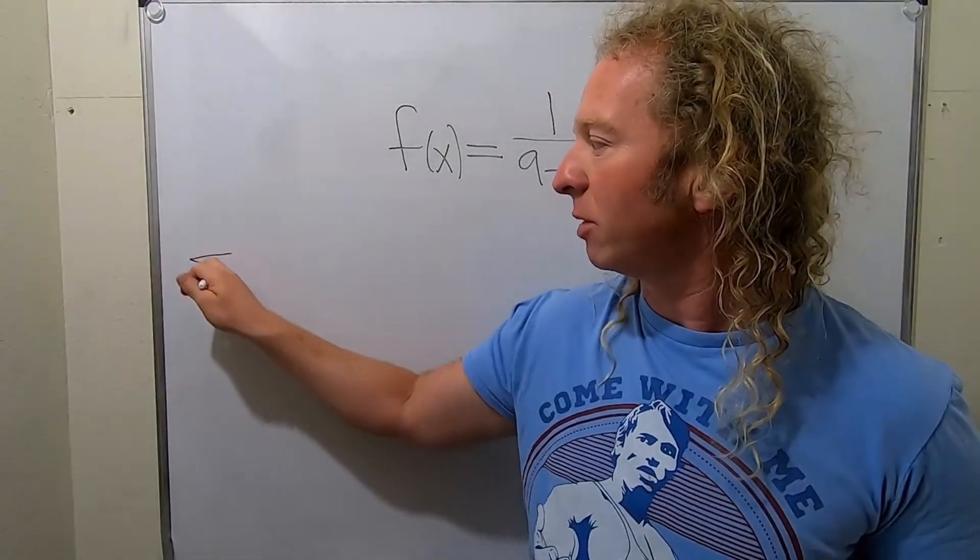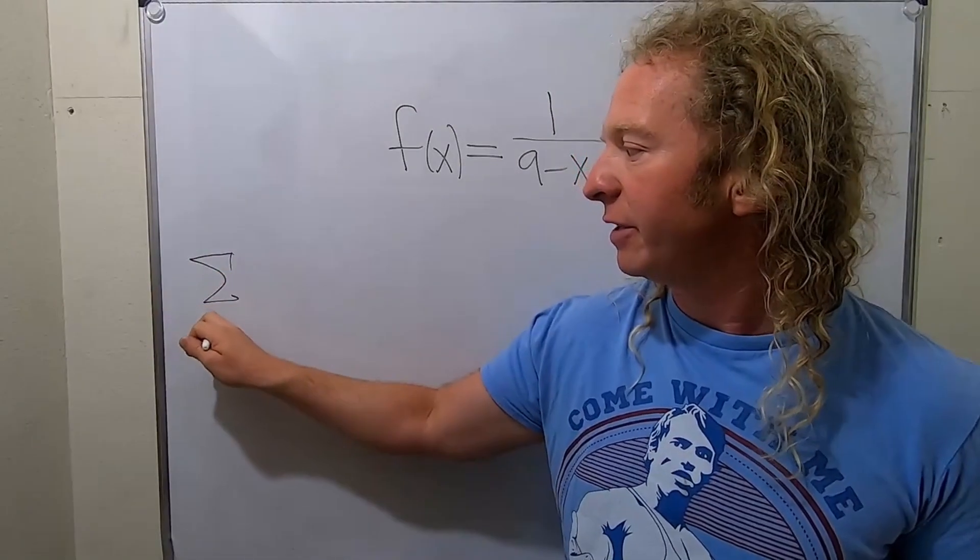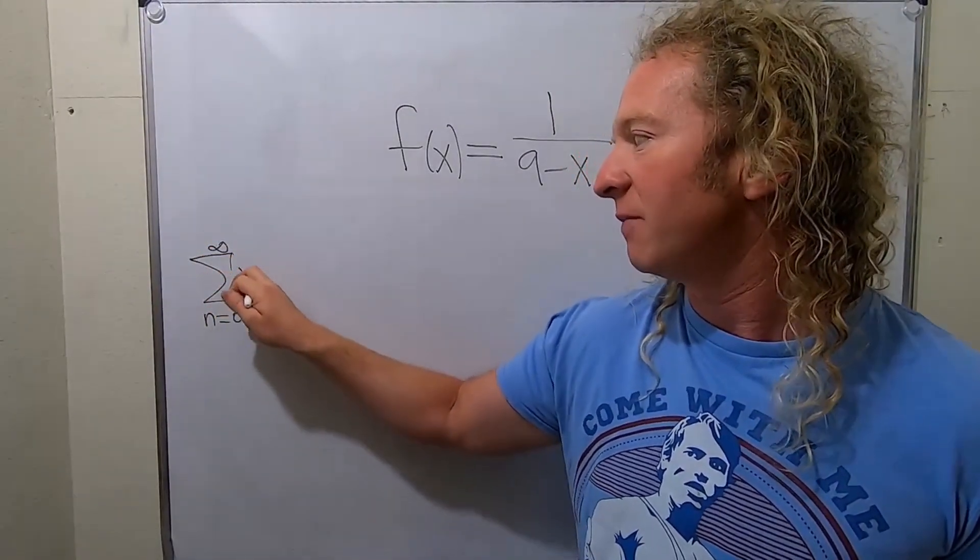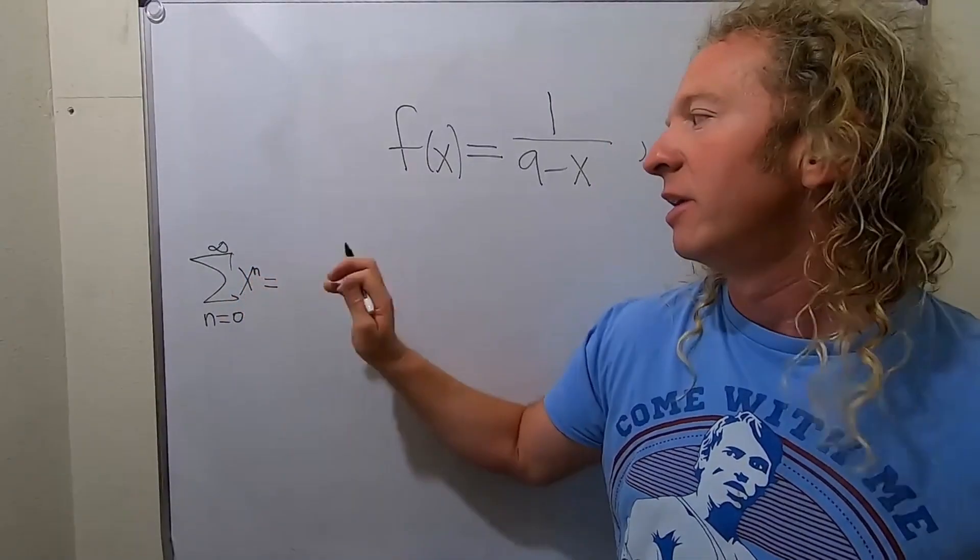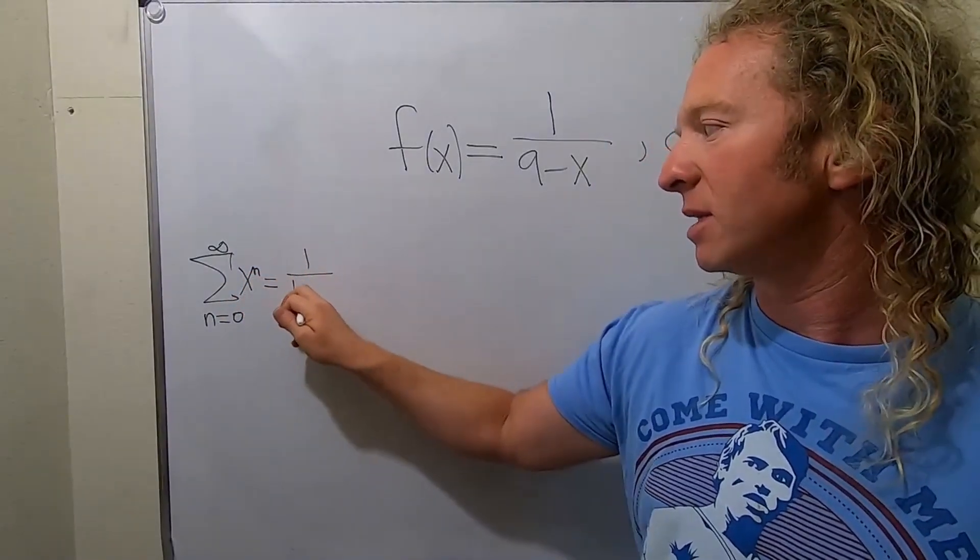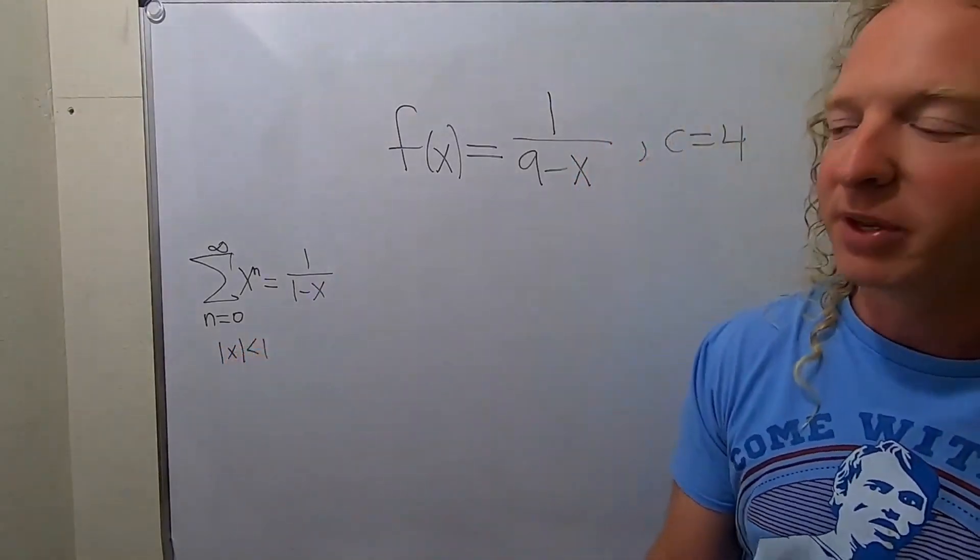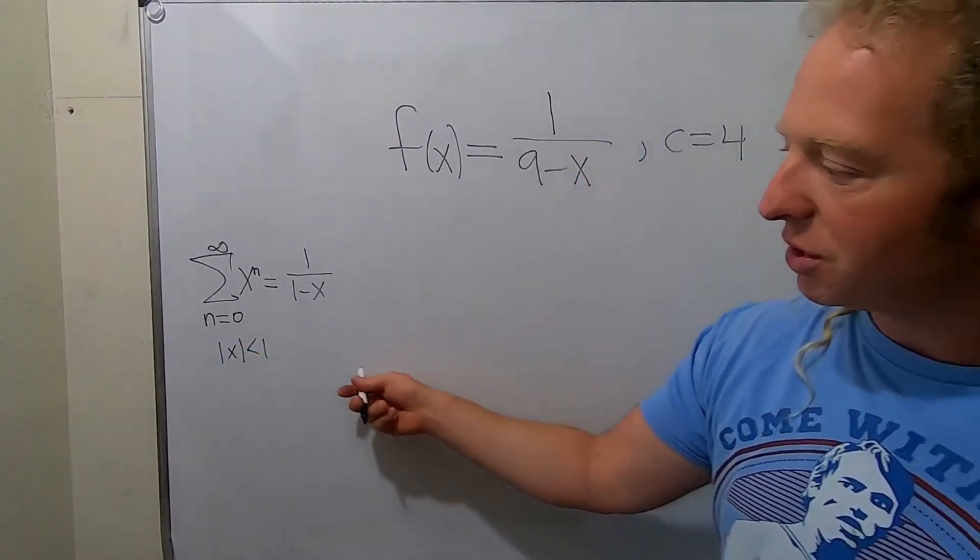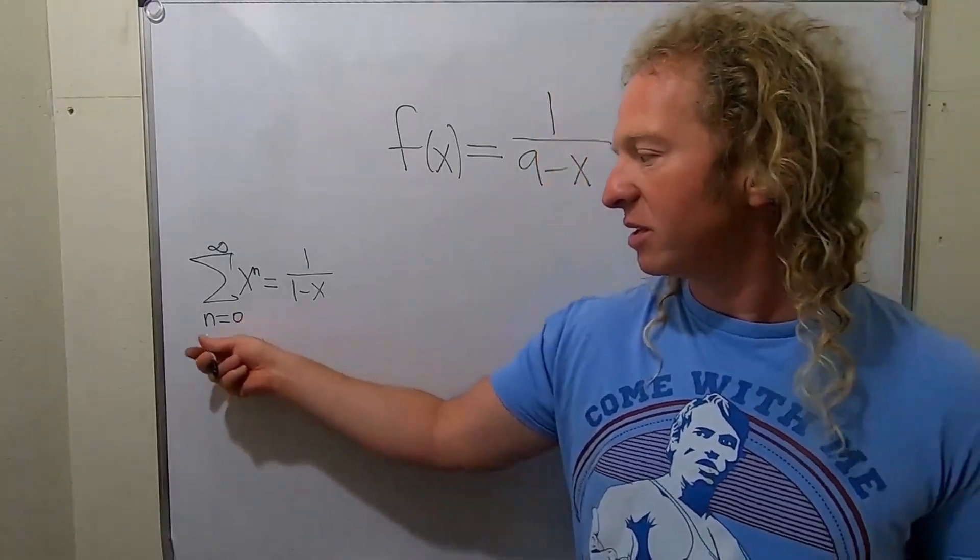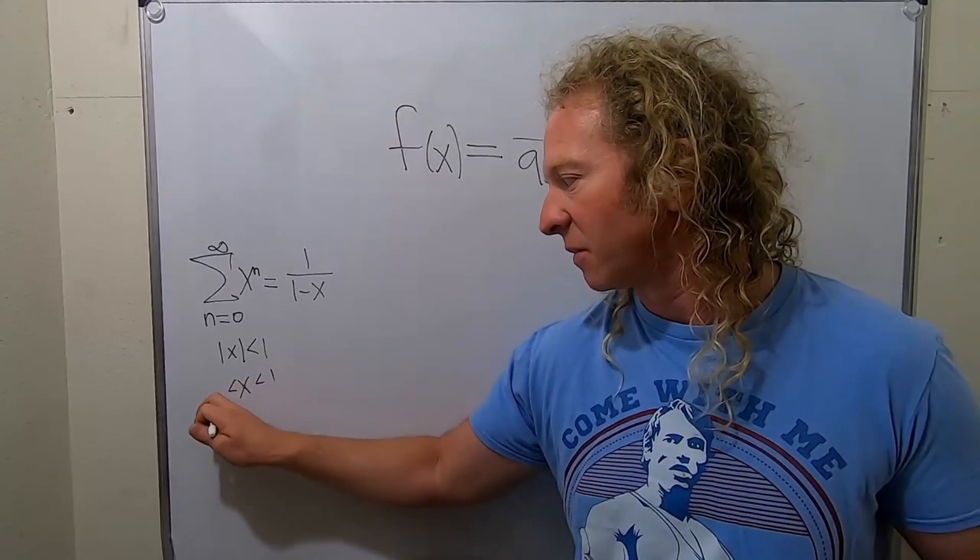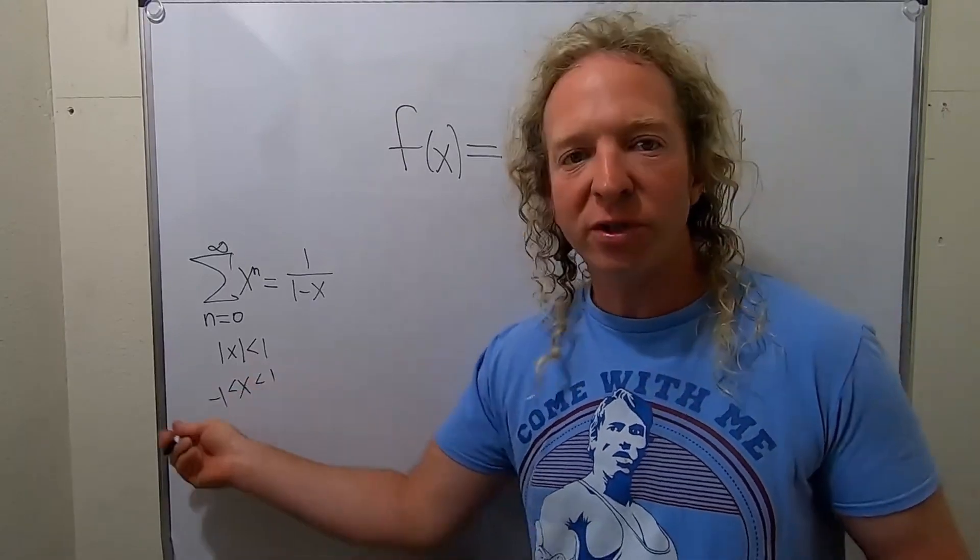The interval of convergence is just the set of all x's for which the series converges. In other words, for which this function is equal to some infinite series. There's a formula we're going to use for this problem. If you take the infinite sum from 0 to infinity of x to the n, this is equal to 1 over 1 minus x. And this is true as long as the absolute value of x is less than 1. This is called the interval of convergence.